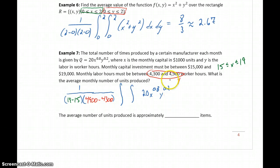We could choose to integrate with respect to x or y first. We'll go with x for no particular reason. So the interior integral would be from 15 to 19, and the outer integral with respect to y would be from 4,300 to 4,900.